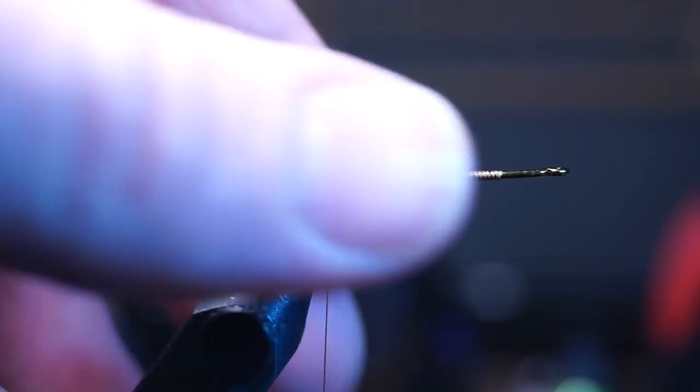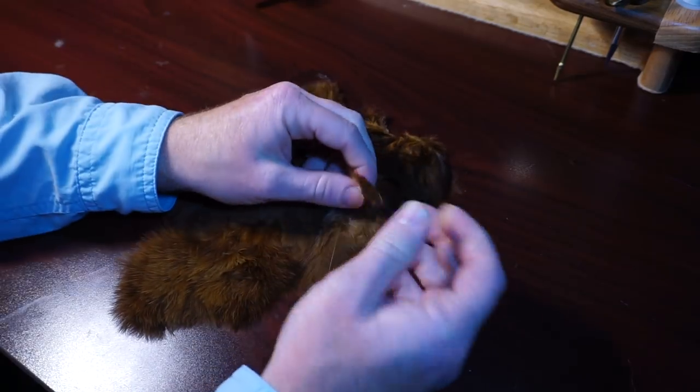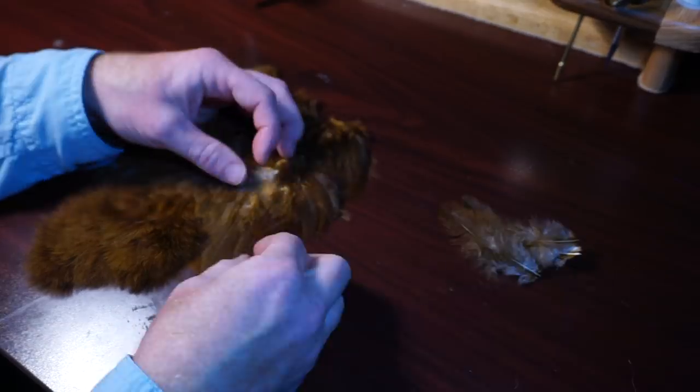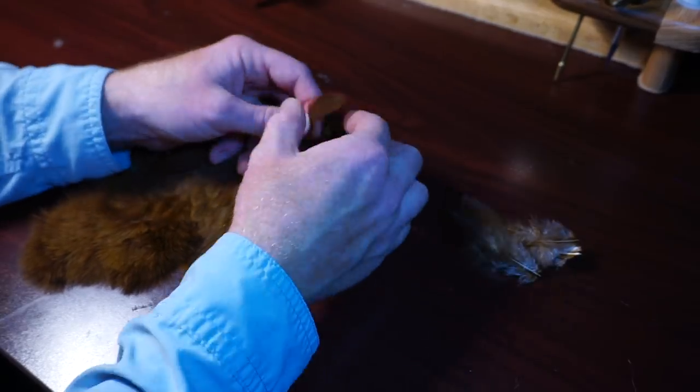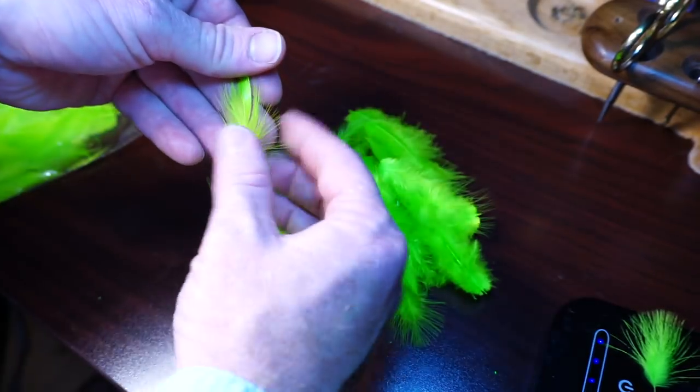I find at this point, wetting the tail makes the next few steps easier. If you're using the pelt, select four appropriate size hackle feathers for your hook. This is a larger hook size, so I'm taking the larger feathers. Or find the right size feathers in your bag of soft hackle.